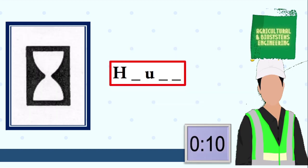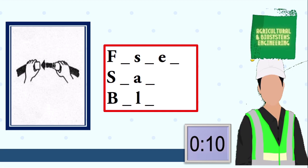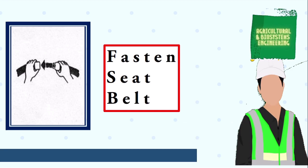Next symbol, your 10 seconds starts now. The answer is hours. Next symbol, your 10 seconds starts now. The answer is fasten seat belt. Next symbol, your 10 seconds starts now.